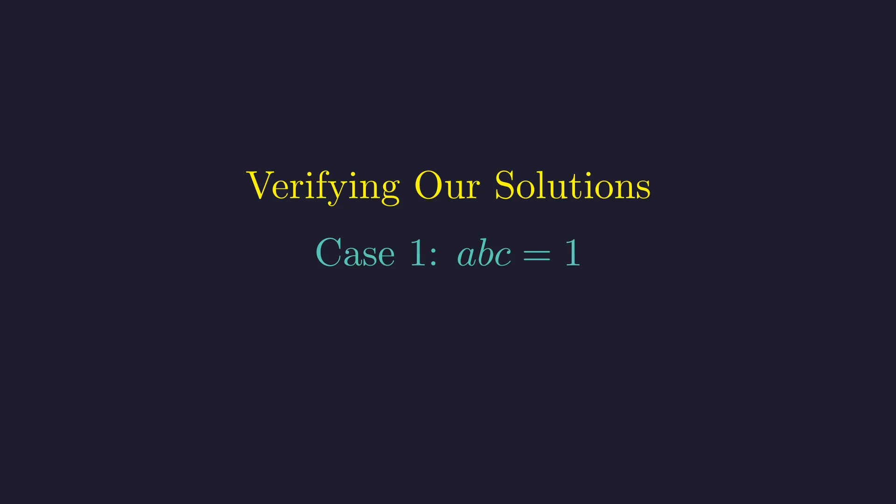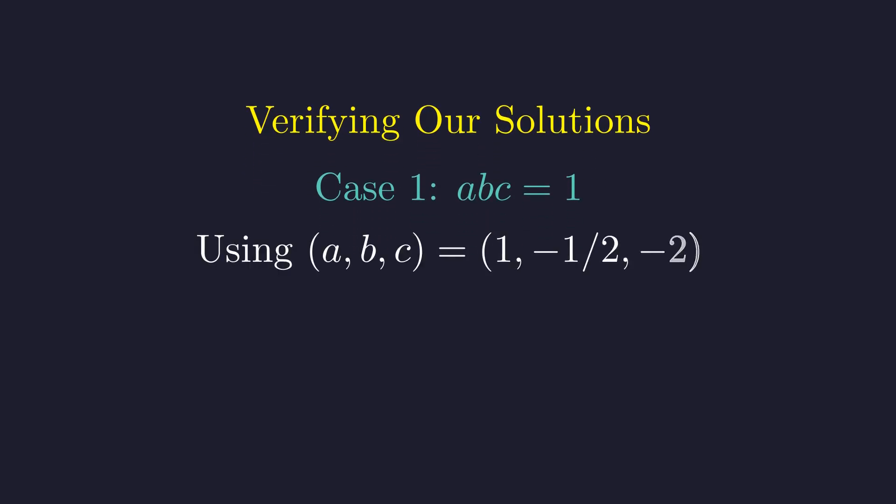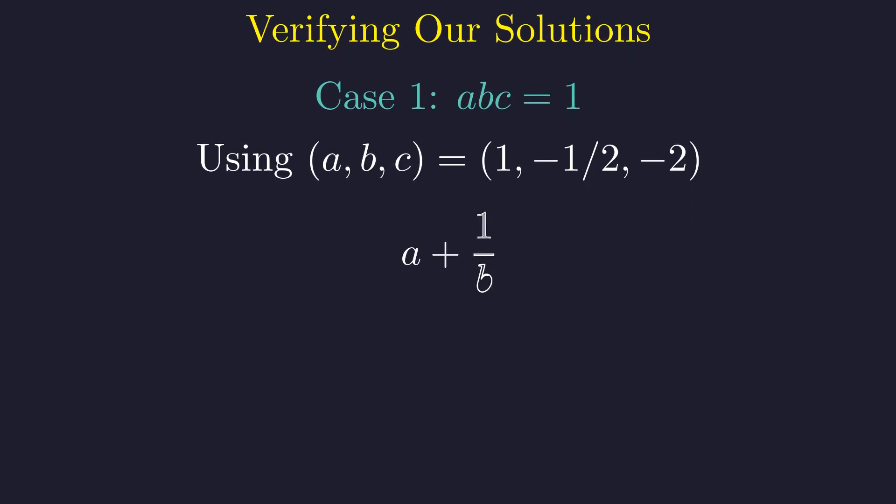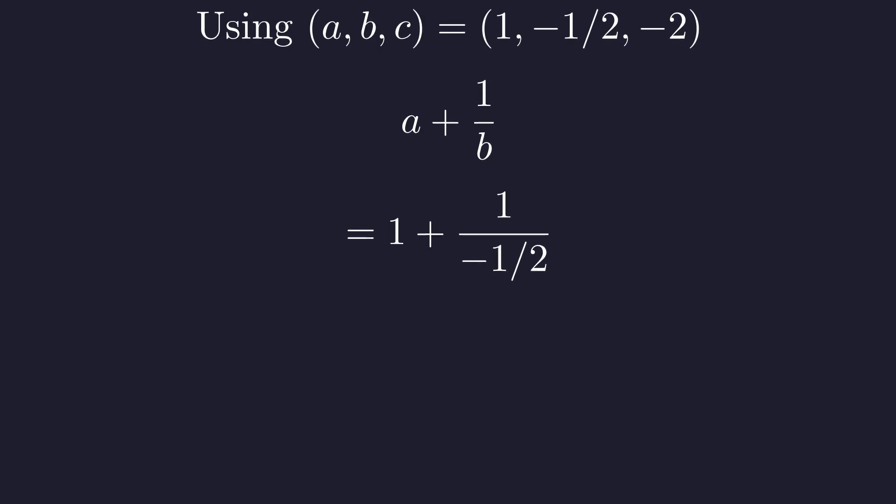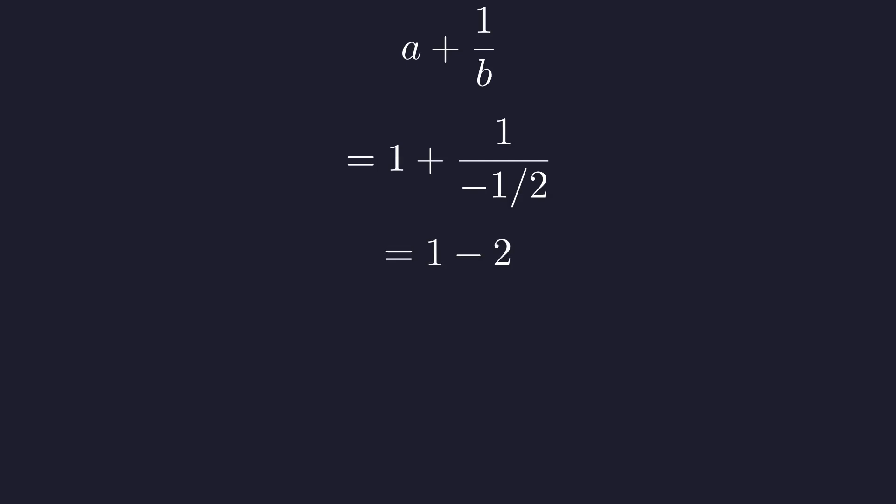First, let's check the case where ABC equals 1. We'll use the example values: A equals 1, B equals negative 1 half, and C equals negative 2. Let's check the first expression, a plus 1 over B. Substituting the values gives us 1 plus 1 over negative 1 half. 1 divided by negative 1 half is negative 2, and 1 minus 2 is negative 1. The first expression checks out.